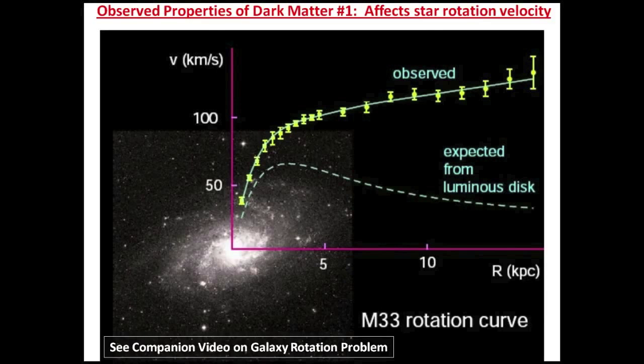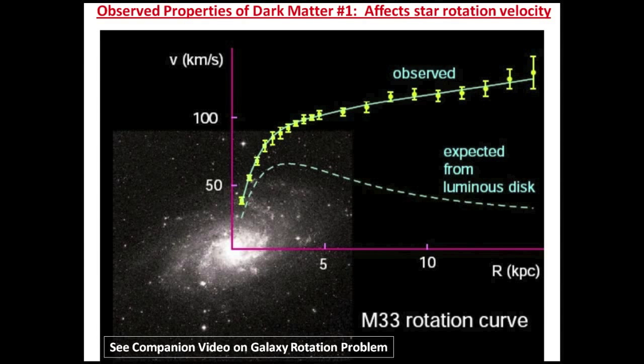Let's review the observed properties of dark matter. In this picture, we see a galaxy called M33 and a plot of the measured star velocities, the data points with error bars, as a function of distance from the galactic center. The upper curve is a fit to this data. The lower curve represents the prediction based on the luminosity of the galaxy. It is evident that these two curves do not match. And that is a problem, namely called the galaxy rotation problem.